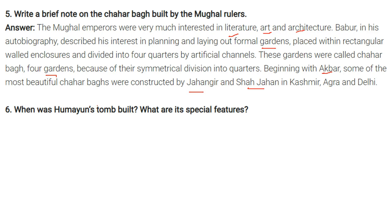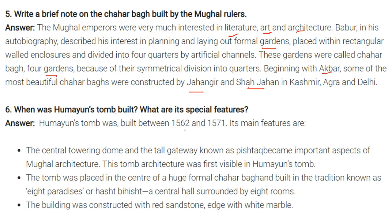Humayun's tomb was built between 1562 and 1571. Its main features — the central towering dome and the tall gateway known as the pishtak — became important aspects of Mughal architecture. The tomb was placed in the center of a huge formal char bagh and built in the tradition known as hasht bihisht (eight paradises), with a central hall surrounded by eight rooms. The building was constructed with red sandstone edged with white marble.